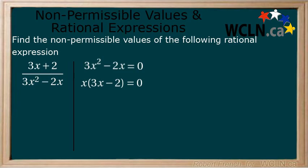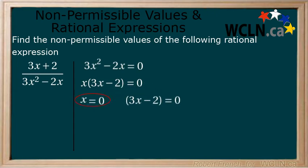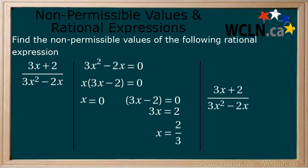Now we can solve for x: x equals 0 and 3x minus 2 equals 0. The first equation is already done with x equals 0. For the second equation, we add 2 to both sides and then divide both sides by 3 to get x equals 2 over 3. Therefore, the non-permissible values of the rational expression are 0 and 2 over 3.